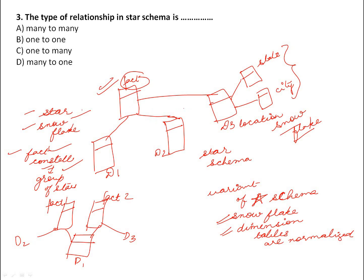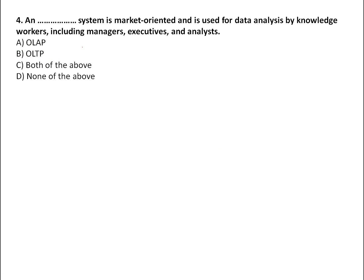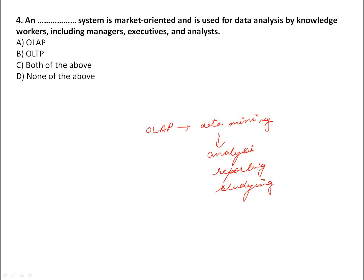The type of relation in a star schema is one-to-many — one fact table connected to many dimension tables. Moving to the next question: a system that is market-oriented and used for data analysis by knowledge workers — the answer is OLAP. OLAP is market-oriented and is used for data mining, analysis, reporting, and studying the market.